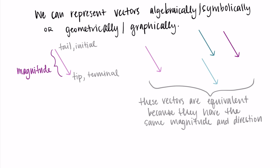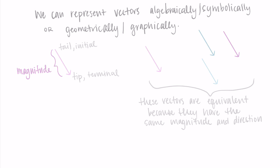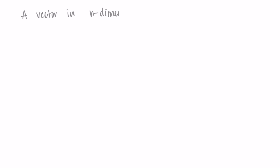These are two-dimensional looking vectors, but the same thing works for three dimensions. Now let's talk about what vectors look like algebraically. We typically talk about two or three dimensions, but we can actually have vectors with n dimensions — as long as n is some finite natural number. A vector looks like v with a little arrow above it, equal to, in pointed brackets, v1, v2, v3, all the way up to vn.